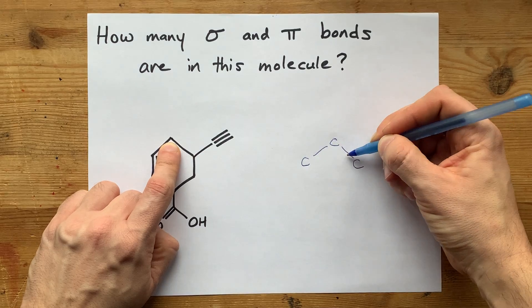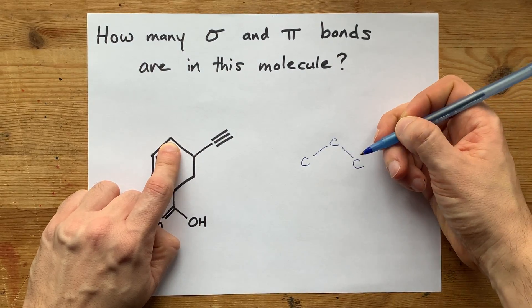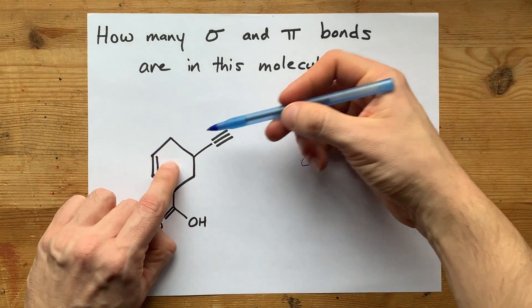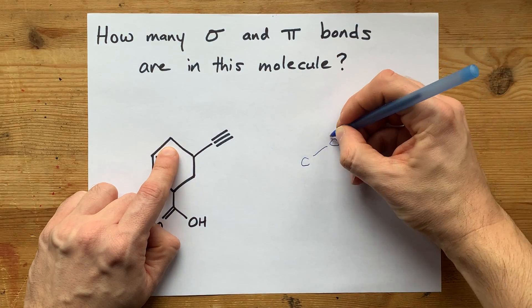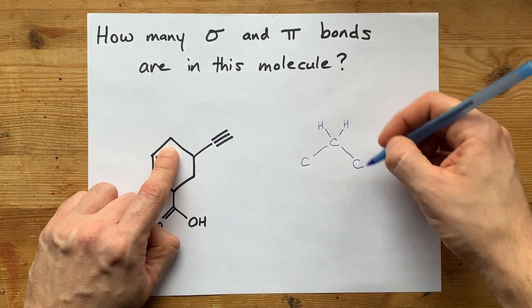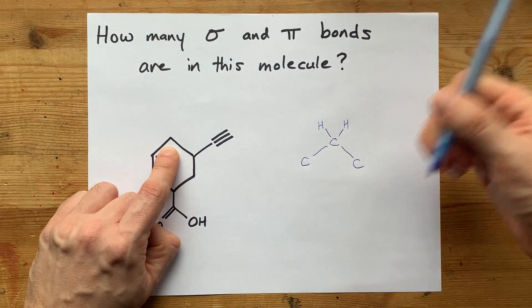The first bond between any two atoms is sigma, so I already have one, two sigma bonds. But carbon atoms need four bonds total, so what gives with that one? Well, the answer is that there's a bond to a hydrogen and another hydrogen, both of which are not shown on this diagram. So that's four sigma bonds total so far.